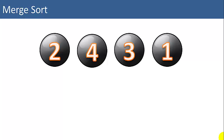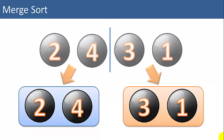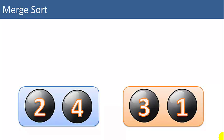So let's say we wanted to sort a small list of four integers: 2, 4, 3, 1. One way to sort them would be to break the list in half into two smaller lists, and sort those two smaller lists.